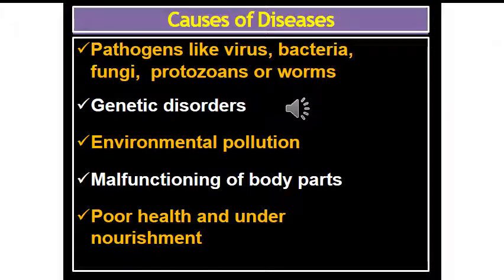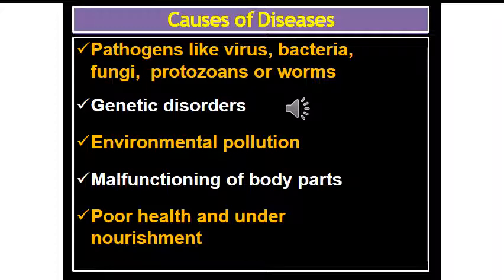Genetic disorders will pass from generation to generation. Environmental pollution — if the environment is polluted through land, water, or air pollution, then the chances of getting disease become more. Malfunctioning of the body parts can be due to genetic disorder or poor nourishment. Poor health — if the body is not getting enough food, the person will be in poor health and will be undernourished.